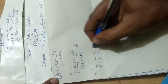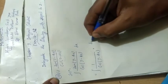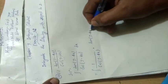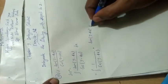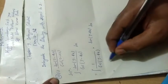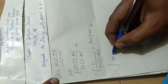This is 1 by cos of 3 minus 4x into tan of 3 minus 4x, then this dx. Now 1 by cos is equal to what? Sec.